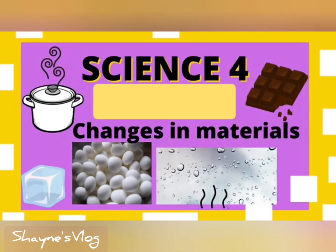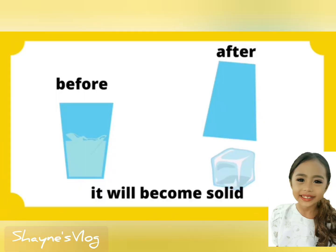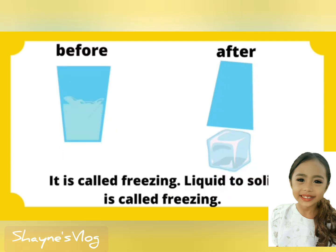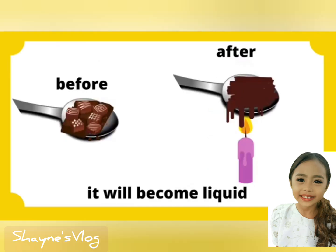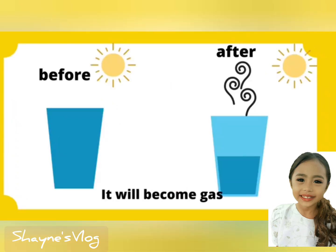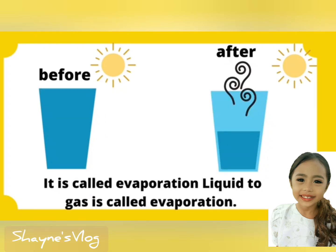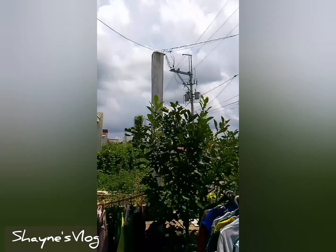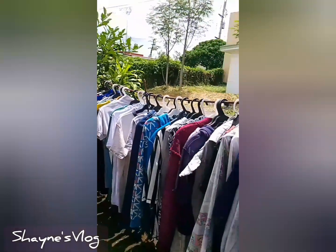Now, let's tackle the topic in Science 4. When liquid turns to solid, it is called freezing. When solid turns to liquid, it is called melting. And when liquid turns to gas, it is called evaporation. Now, let's have some experiment.